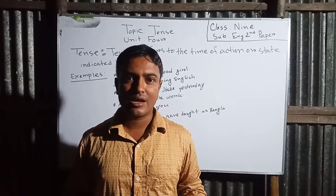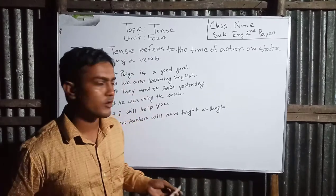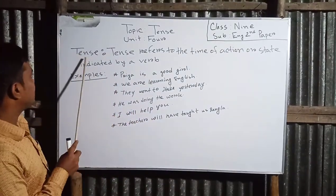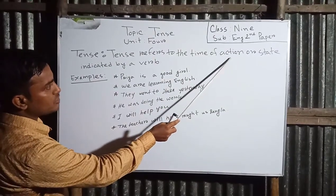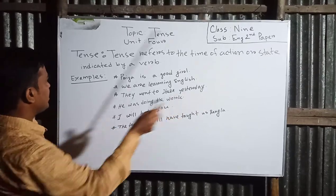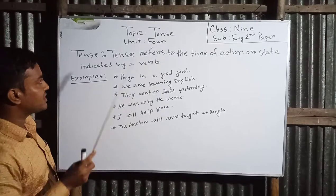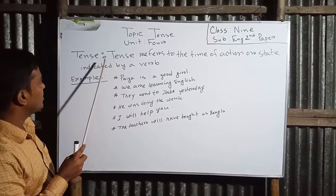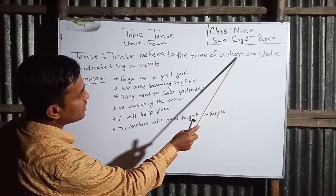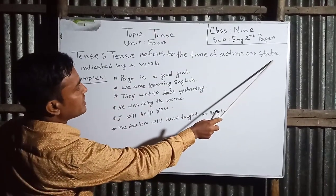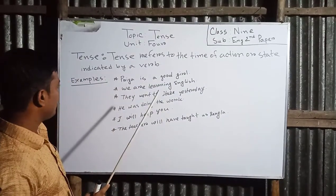Dear students, now let's see the definition of tense. Look at the whiteboard please. Tense refers to the time of action or state indicated by a verb.